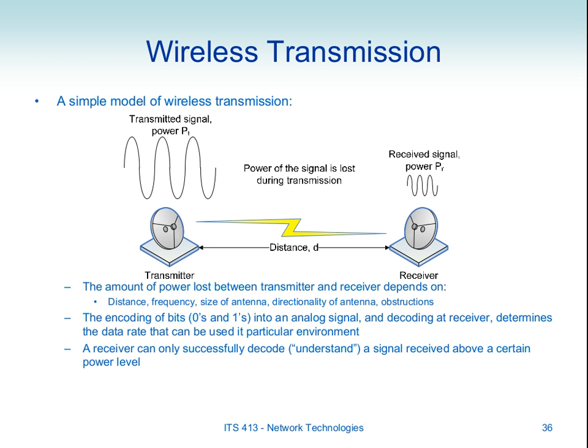We summarised a simple model for wireless transmission where we have some transmitter that takes an electrical signal and the antenna transmits a signal to a receiver. We transmit at some power level. The antenna in fact introduces some gain — it increases the strength of the signal. The signal attenuates, it gets weaker as it travels across some distance. It's received at some signal strength by the receiver, the receiving antenna introduces some gain and we get the final received signal power, PR.